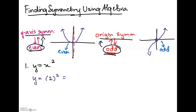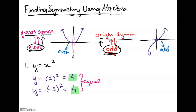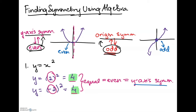Let's substitute positive 2: we get 2² = 4. Now substitute negative 2: (-2)² = positive 4, because the negatives cancel. Both substitutions give us 4 — they're equal. If both answers are equal after substituting a positive and negative version of a number, the function is even, which means it has y-axis symmetry. If we had the graph, this is exactly what the parabola y = x² looks like.